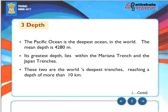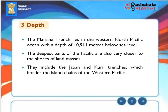Depth: The Pacific Ocean is the deepest ocean in the world, with a mean depth of 4,280 meters. Its greatest depth lies within the Mariana Trench and the Japan Trenches, the world's deepest trenches, reaching a depth of more than 10 kilometers. The Mariana Trench lies in the western North Pacific Ocean at a depth of 10,911 meters below sea level. The deepest parts of the Pacific are very close to the shores of land masses, including the Japan and Kuril Trenches bordering the island chains of the western Pacific.